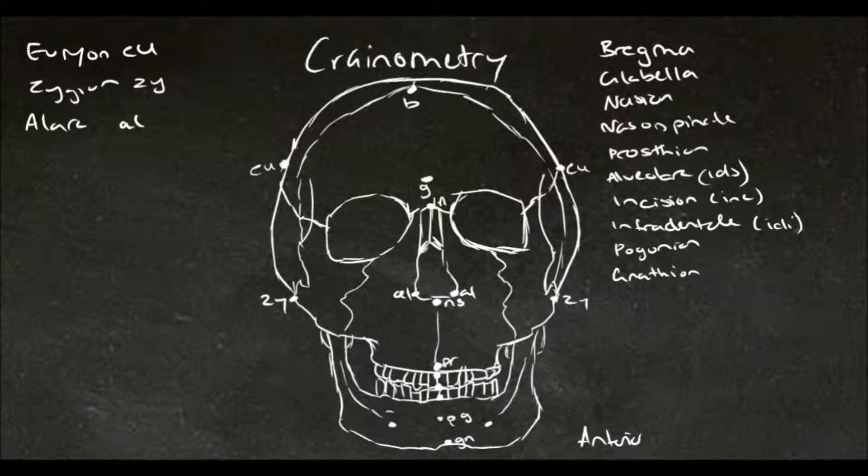The next one we're going to have a look at is called the ectomolare, and this usually lies on top of the second maxillary molars.